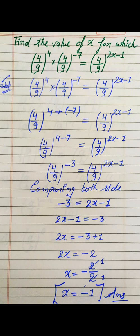Then, moving −1 to the right-hand side it becomes +1. Since the signs are different we subtract: 2x = −3 + 1 = −2. The 2 is in multiplication on the left, so when it moves to the other side it becomes division: x = −2 ÷ 2. Both 2s cancel, giving x = −1, which is our final answer.